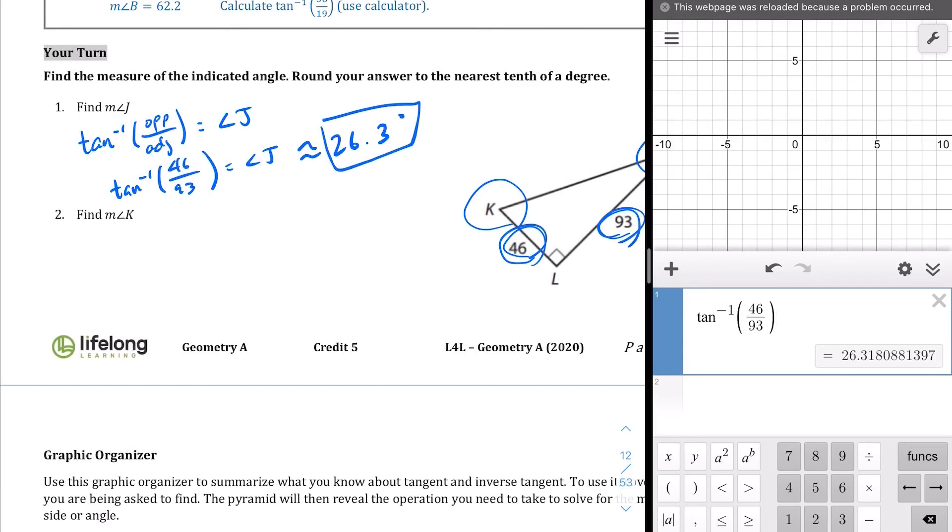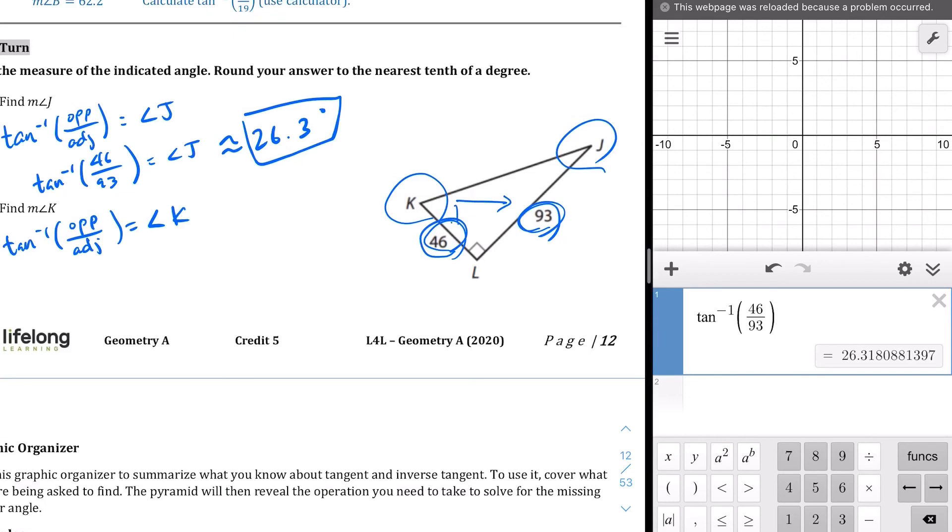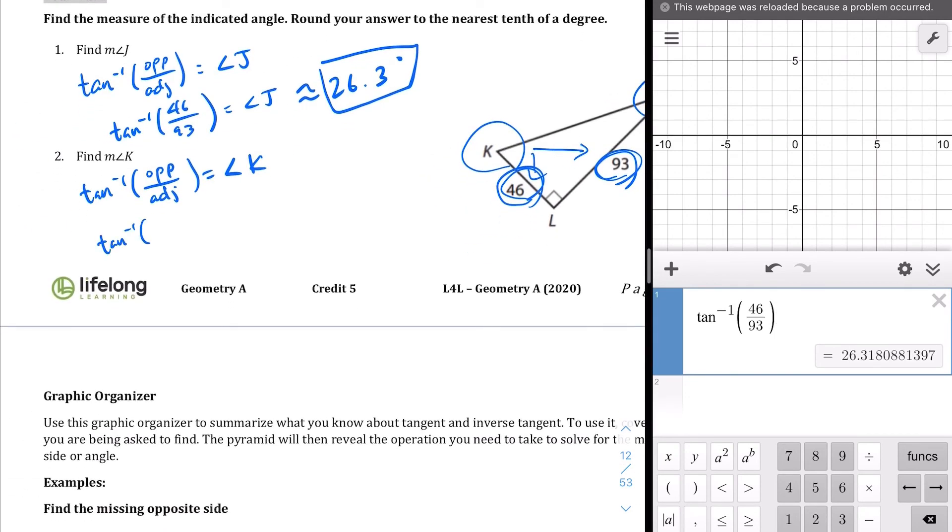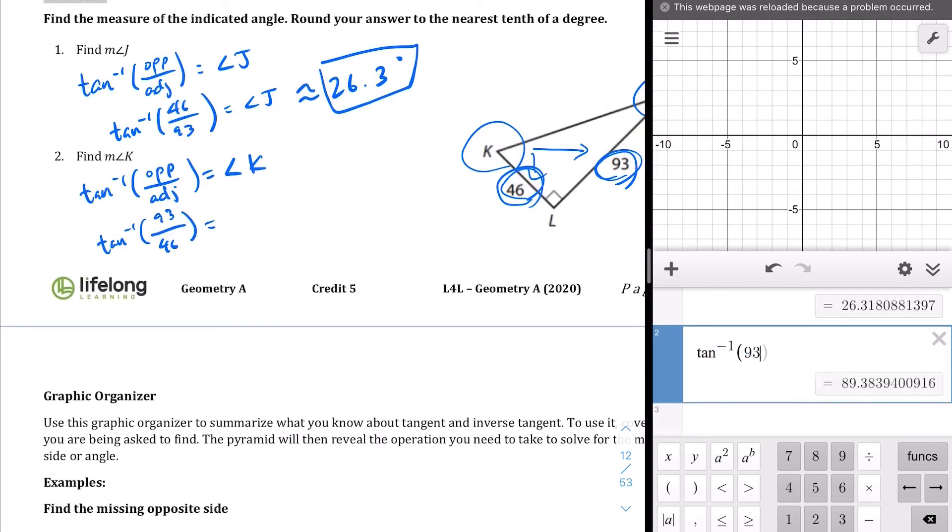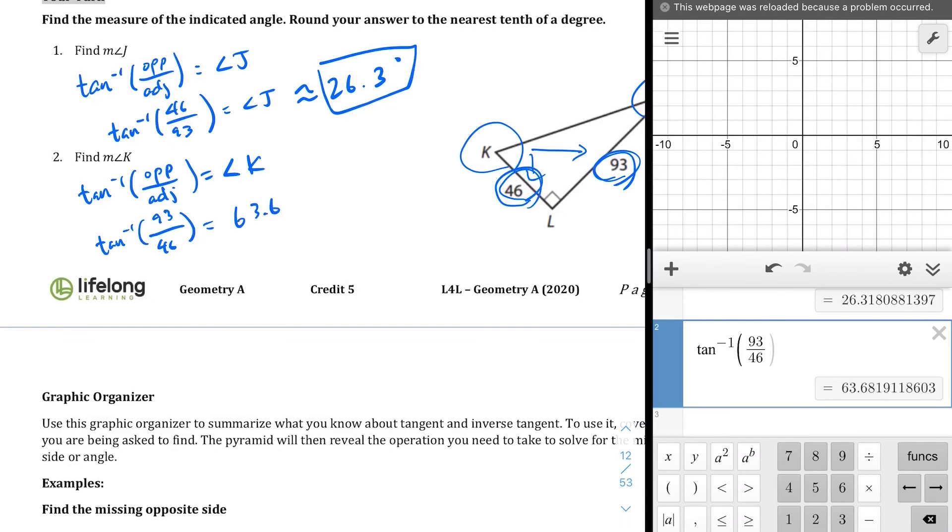We're going to do the same thing for angle K. It's going to be the inverse tangent of the ratio, which again is the opposite over the adjacent, and that should be the measure of angle K. So in respect to K, what is the opposite and the adjacent? Well, the opposite is 93, and the adjacent is 46. So inverse tangent, opposite is 93, adjacent is 46. Let's punch that into the calculator once again. Inverse tangent of 93 divided by 46. We should get 63.68. So angle K equals 63.68 degrees, approximately 63.68 degrees.